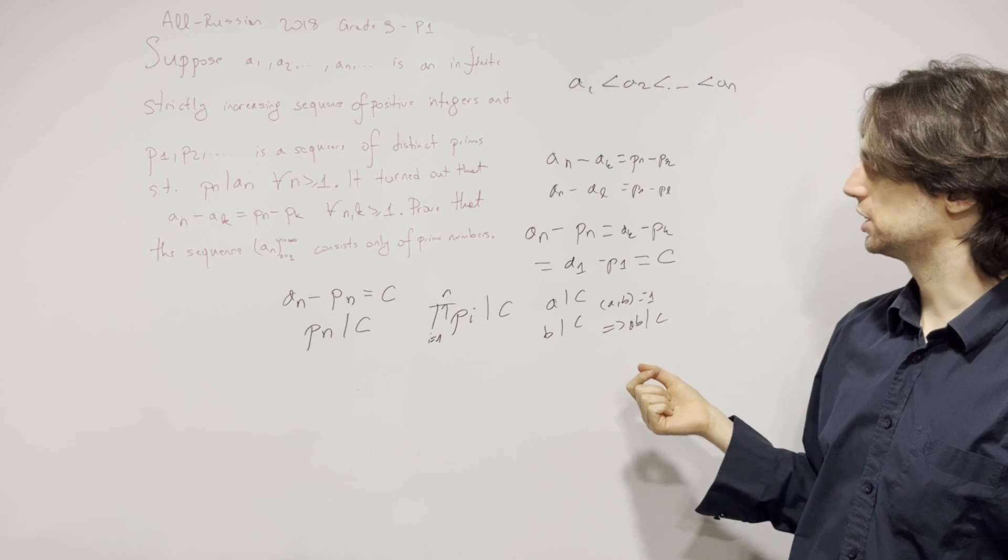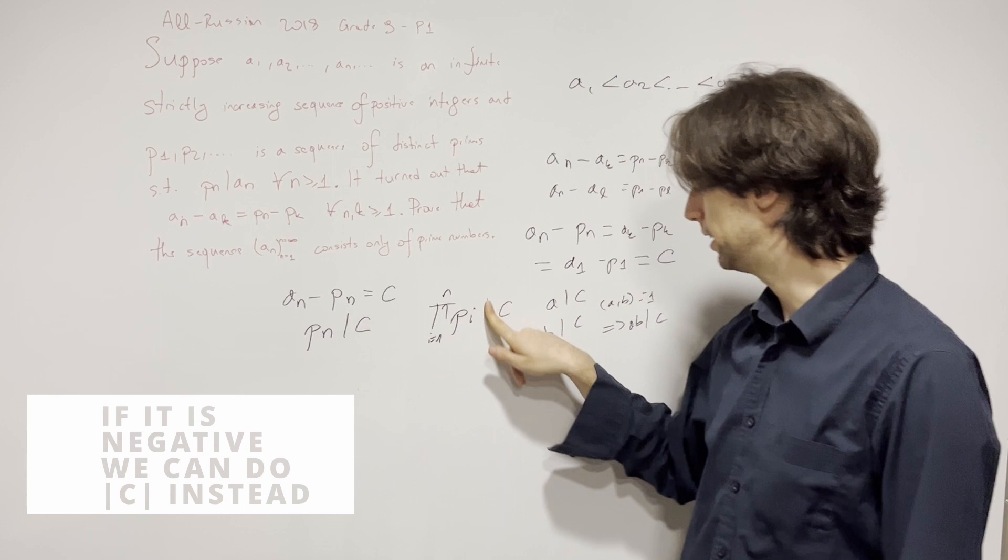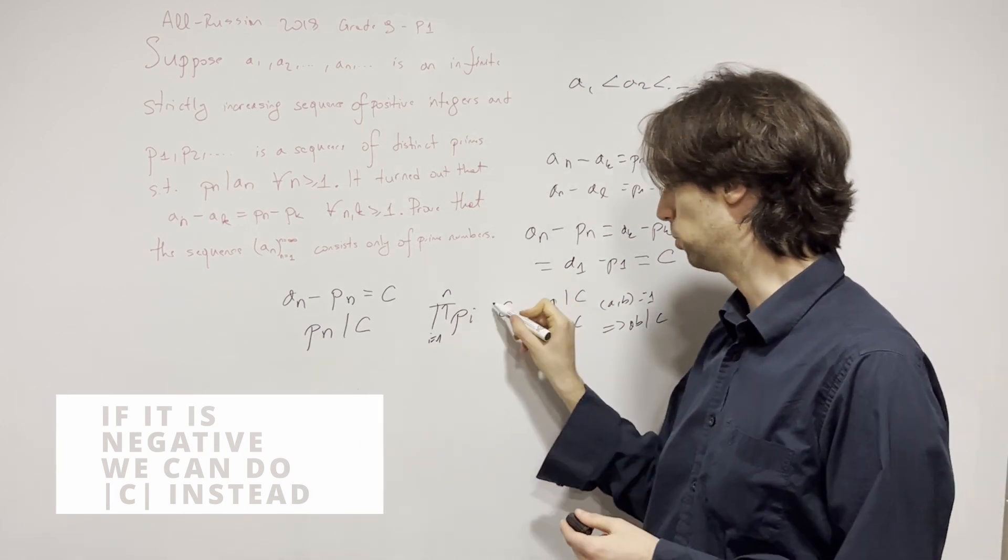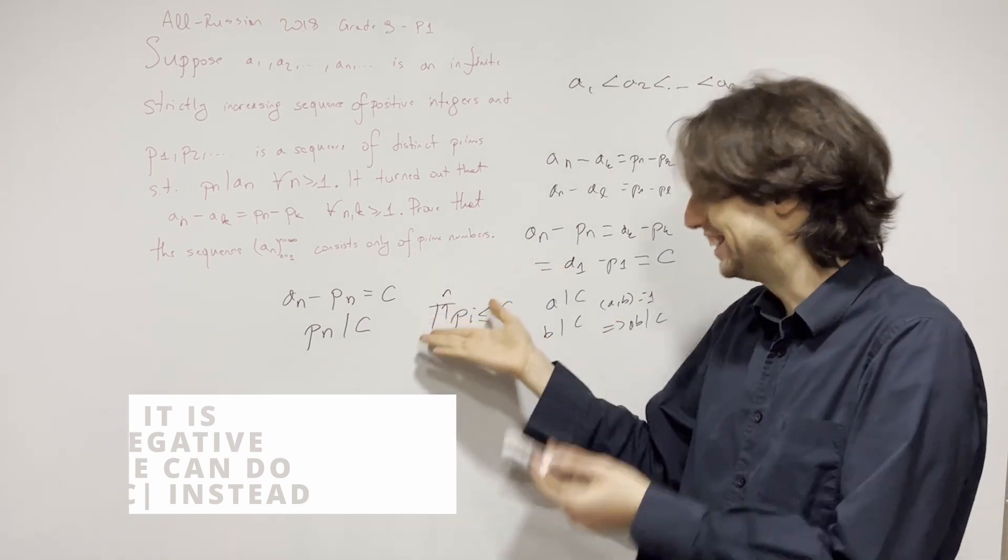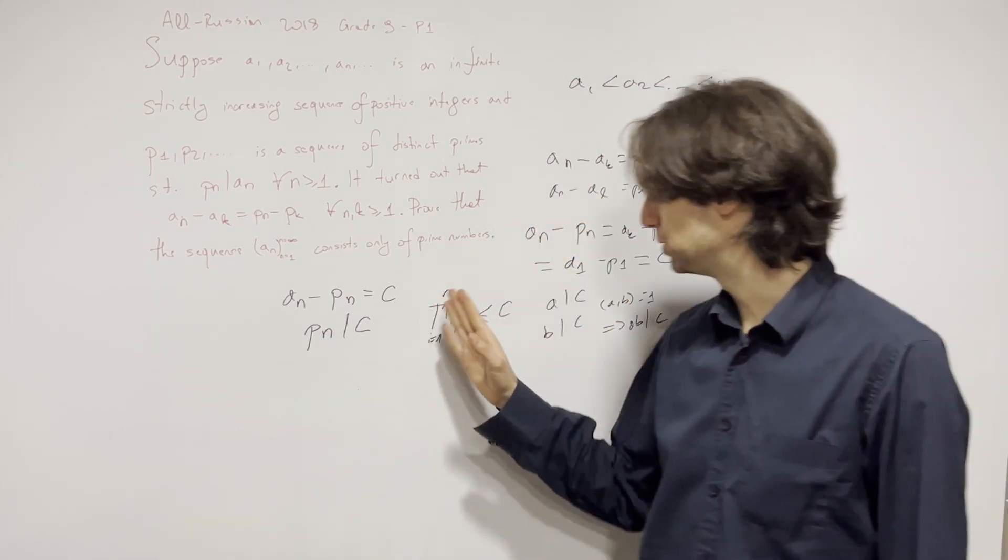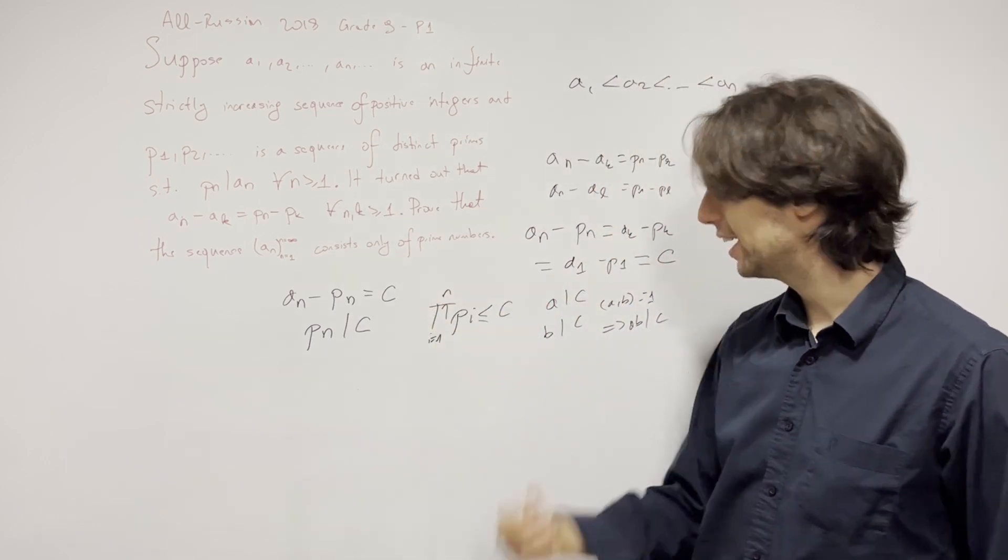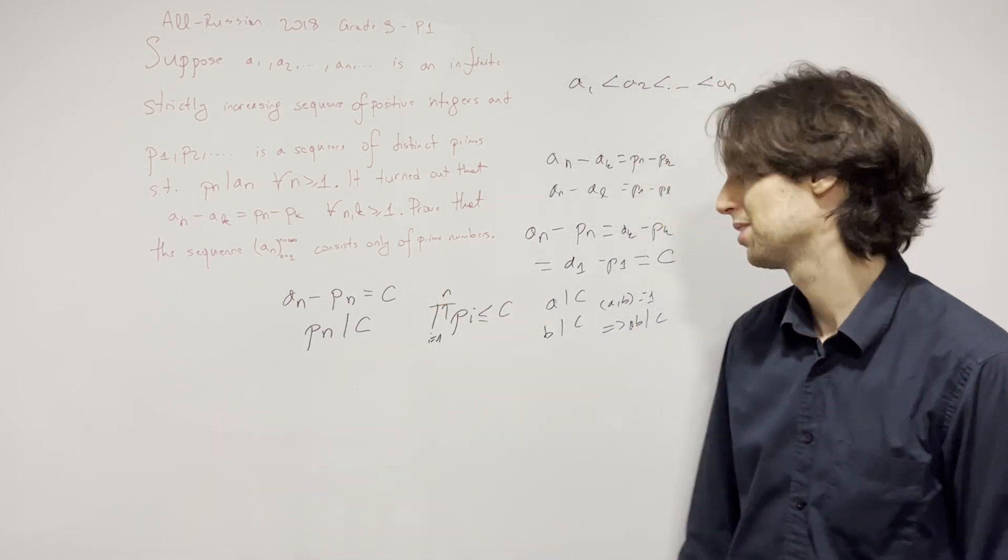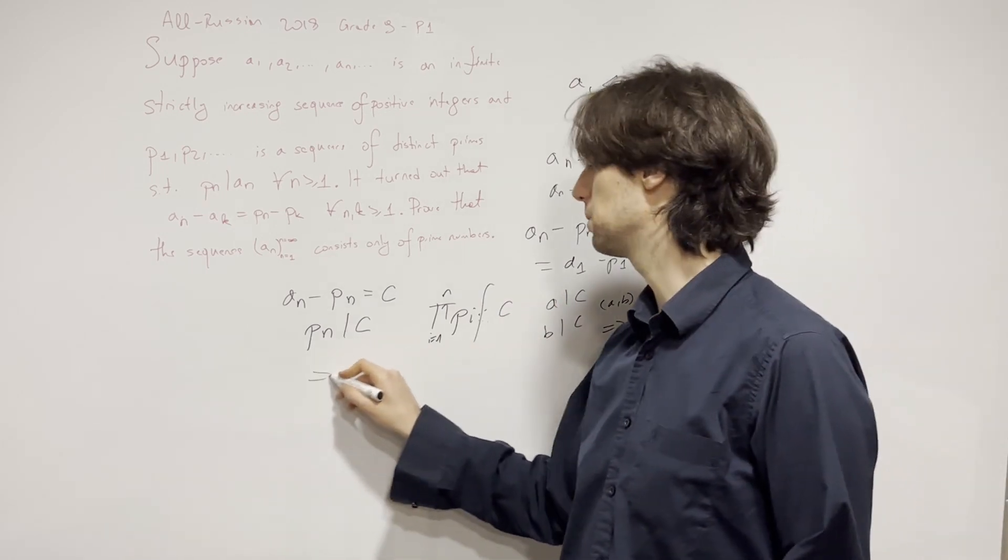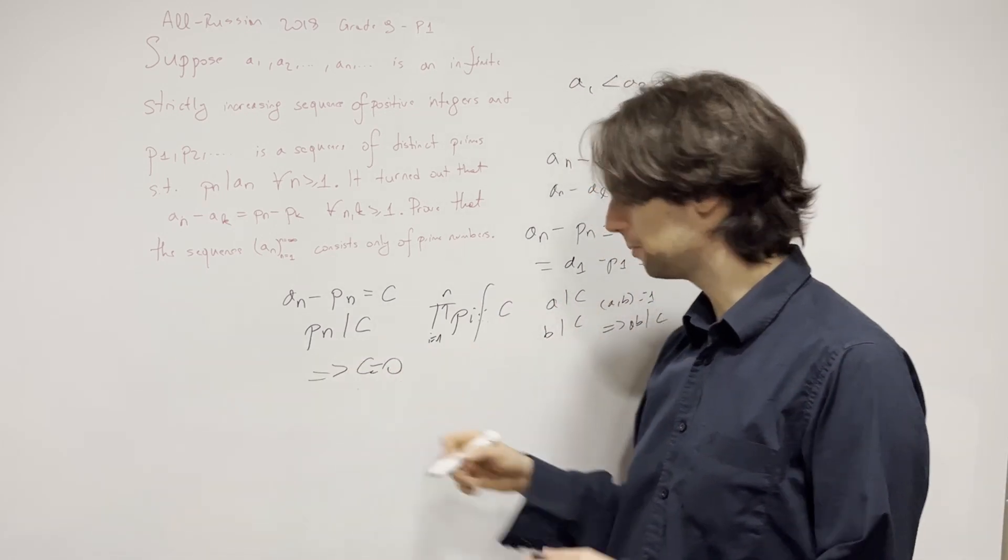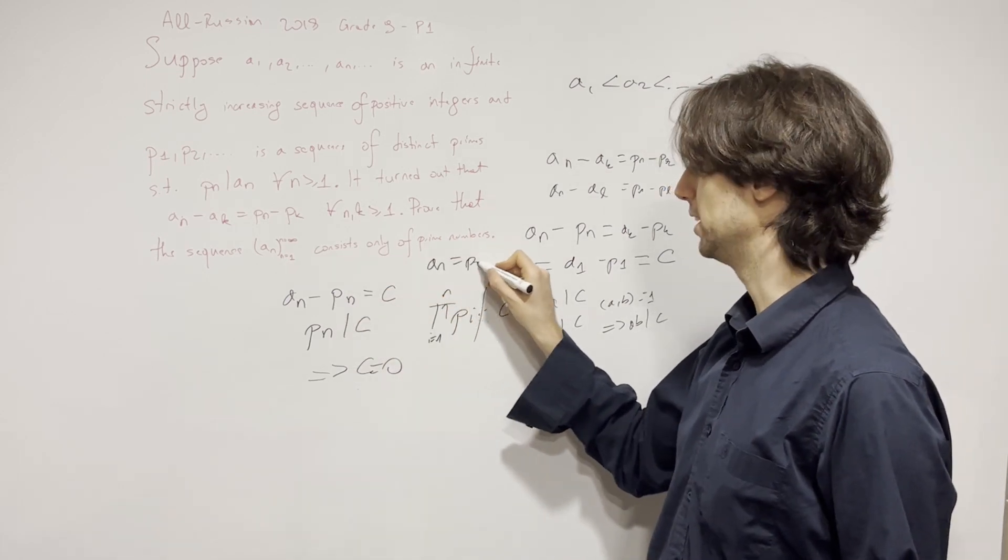If c was a positive integer, then this would need to hold true for every single n. However, this is impossible because once you add every p, the difference between p_{n+1} and p_n is at least two, and at some point it will exceed c. This implies that c is equal to zero, which means a_n equals p_n for every n.